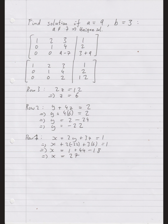Now let's look at one possible unique solution. Suppose we're asked to find the solution when a equals nine and b equals three. Quick check: a is not equal to seven — it's nine — so we have a unique solution. Let's substitute nine for a and three for b to get the augmented matrix.